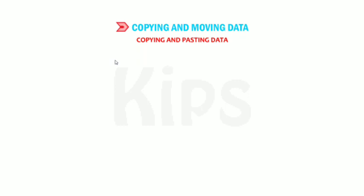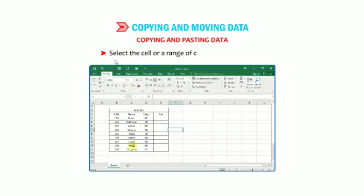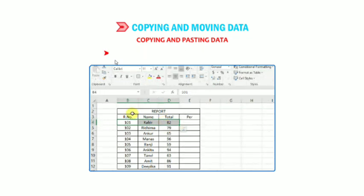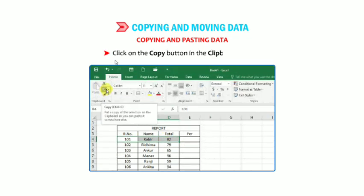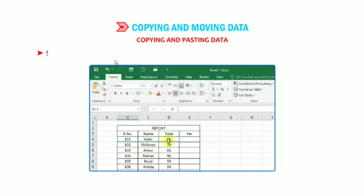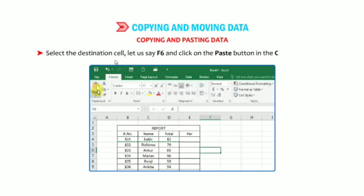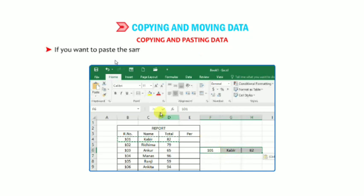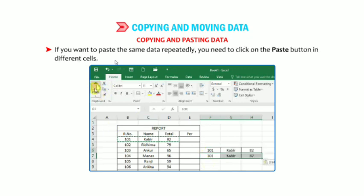Copying and pasting data: select the cell or range of cells you want to copy, for example B4 to D4. Click on the Copy button in the Clipboard group — a dashed line will appear around the selected cells. Select the destination cell, for example F6, and click on the Paste button in the Clipboard group. The text will be copied to the new location. If you want to paste the same data repeatedly, click on the Paste button in different cells.